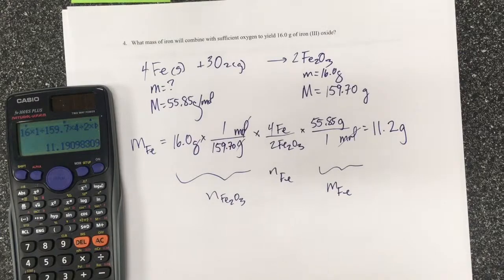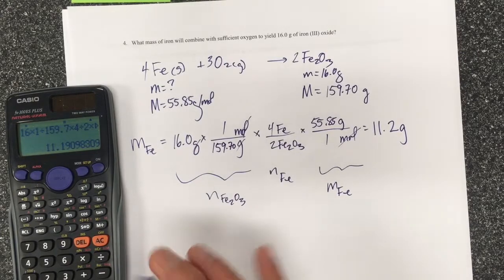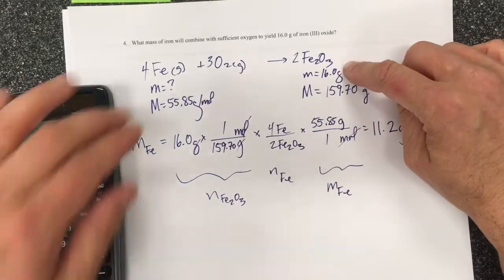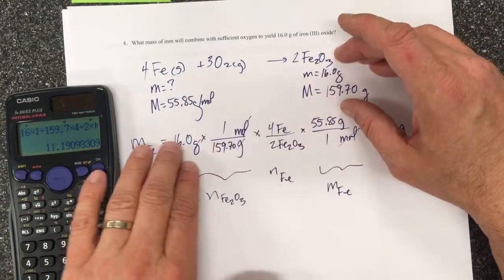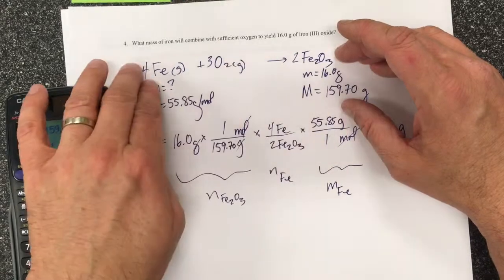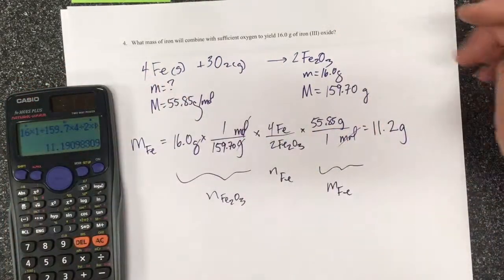So all stoichiometry questions follow this basic pattern where they tell you an amount of something and they want you to find an amount of something else. And so you start with what you know, convert it into moles, figure out what the moles of the thing you want is, and then find the other value.